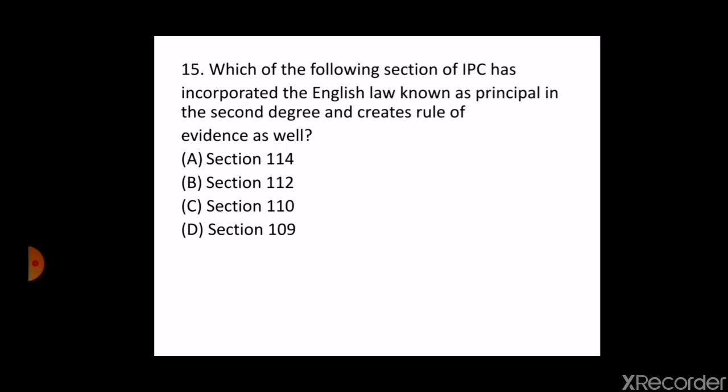The last question of the series is: which section of IPC has incorporated the English law known as 'principal in the second degree' and creates a rule of evidence as well? Options: A. Section 114, B. Section 112, C. Section 110, D. Section 109. The correct answer is A — section 114. Section 114 of IPC deals with abatment present when the offence is committed. This was asked in the Jharkhand Judiciary Examination in 2015.